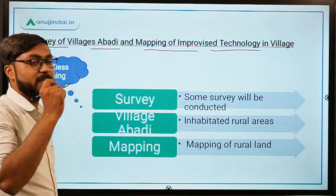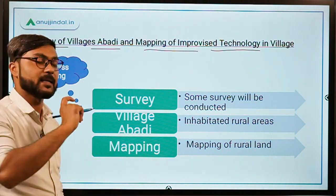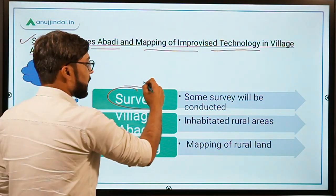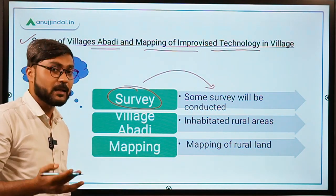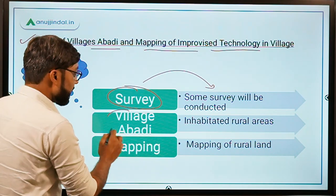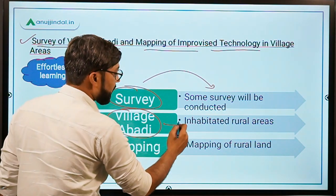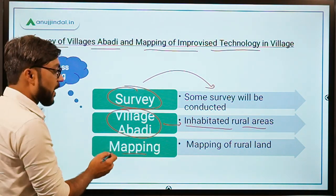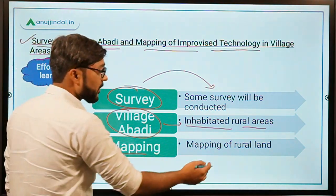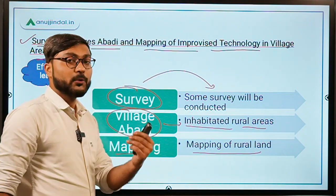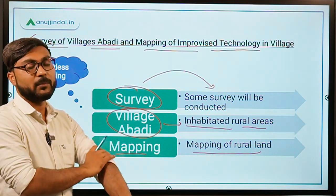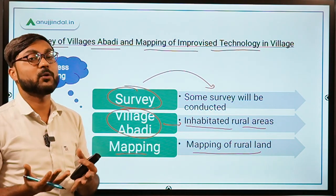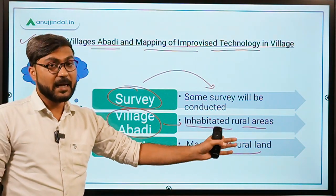There is the word 'survey,' which means some kind of survey will be conducted under the scheme. Then we have 'village abadi,' which means inhabited rural areas. Then we have 'mapping' — mapping of rural land. So if we are talking about rural areas, then the mapping will of course be of the rural land.